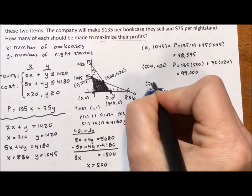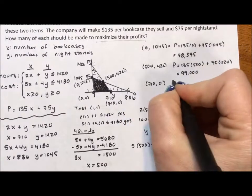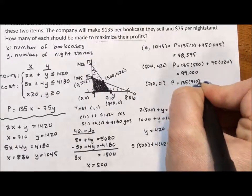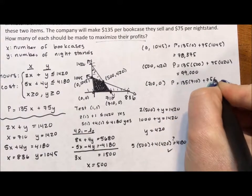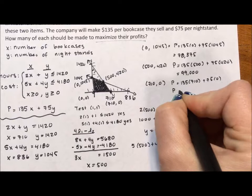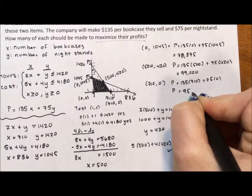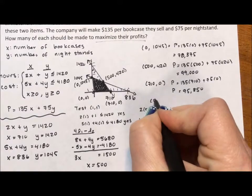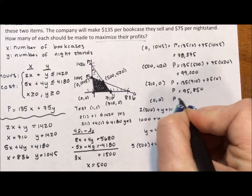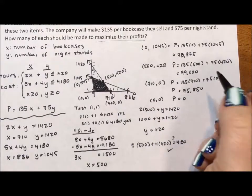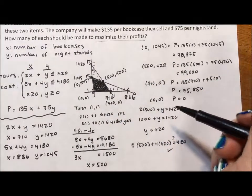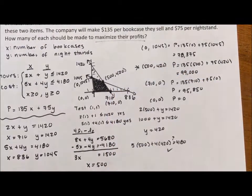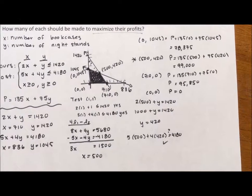What happens if I have 710 bookcases and no nightstands? So 135 times 710 plus 75 times zero and the profit in this case is going to be $95,850. This is going to seem strange. I'm going to test out my origin. Why? I just do. I have four corners. I'm doing four tests. We can see that this is where our profits will get maximized.